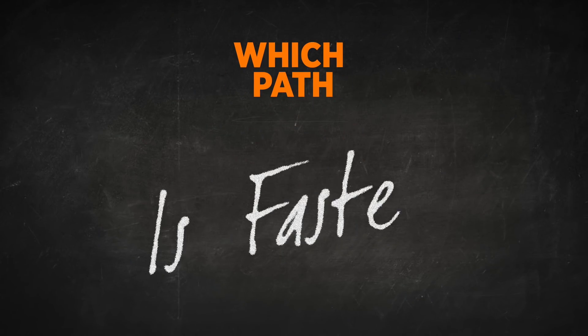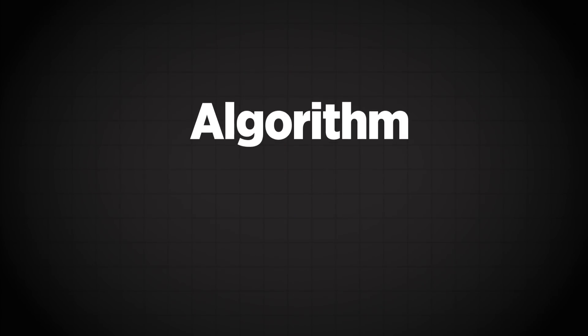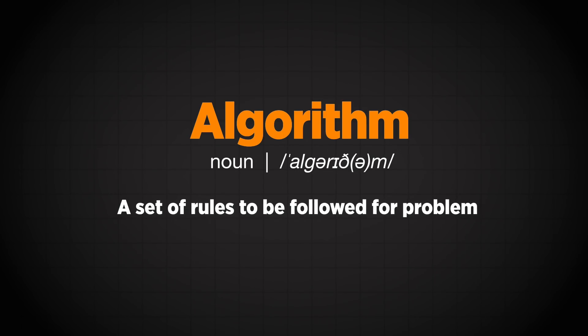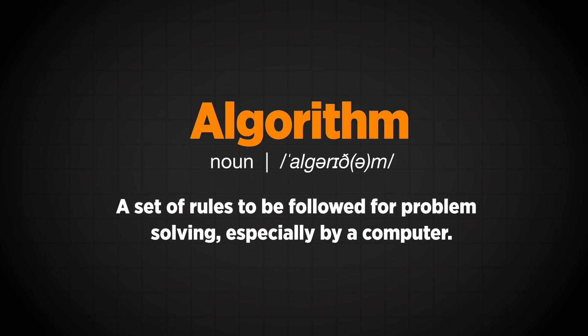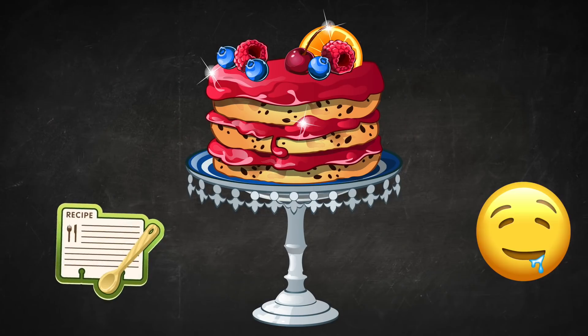There are thousands of different paths the data can take. How do the computers in the network know which path will be the fastest? They use an algorithm to calculate the best path. An algorithm is simply a set of instructions to follow — just like following a recipe to make your favorite cake. The algorithm I'm going to teach you is one I've used in some of my own inventions.